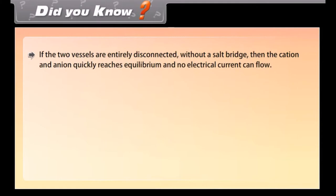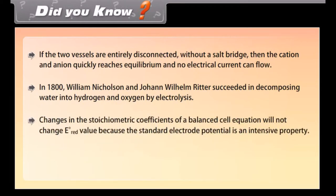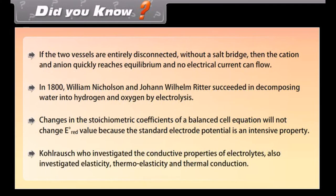Did you know? If the two vessels are entirely disconnected without a salt bridge, then the cations and anions quickly reach equilibrium and no electrical current can flow. In 1800, William Nicholson and Johan Wilhelm Ritter succeeded in decomposing water into hydrogen and oxygen by electrolysis. Changes in the stoichiometric coefficients of a balanced cell equation will not change the E° value because standard electrode potential is an intensive property. Kohlrausch, who investigated the conductive properties of electrolytes, also investigated elasticity, thermo-elasticity, and thermal conduction.